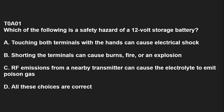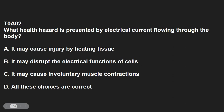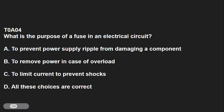T0A01: Which of the following is a safety hazard of a 12-volt storage battery? Shorting the terminals can cause burns, fire, or an explosion. T0A02: What health hazard is presented by electrical current flowing through the body? It may cause injury by heating tissue, it may disrupt the electrical functions of cells, it may cause involuntary muscle contractions — all of those. T0A04: What is the purpose of a fuse in an electrical circuit? That's to remove power in case of overload.